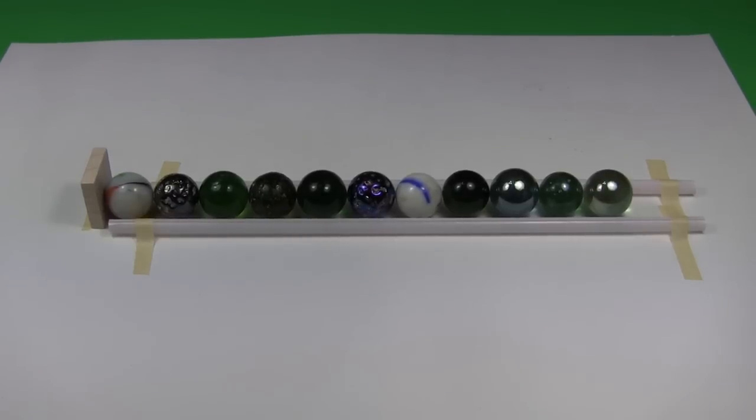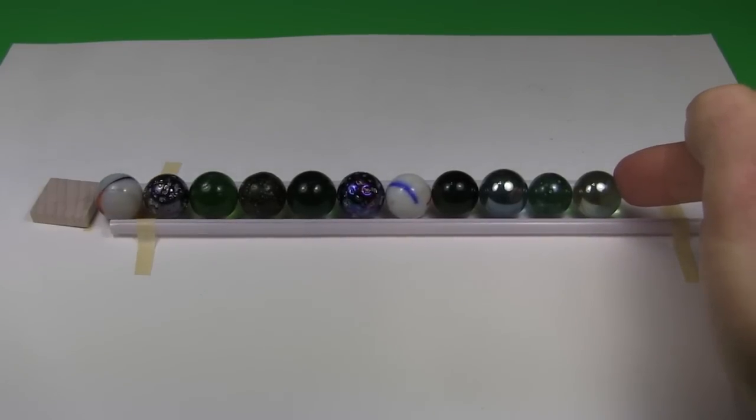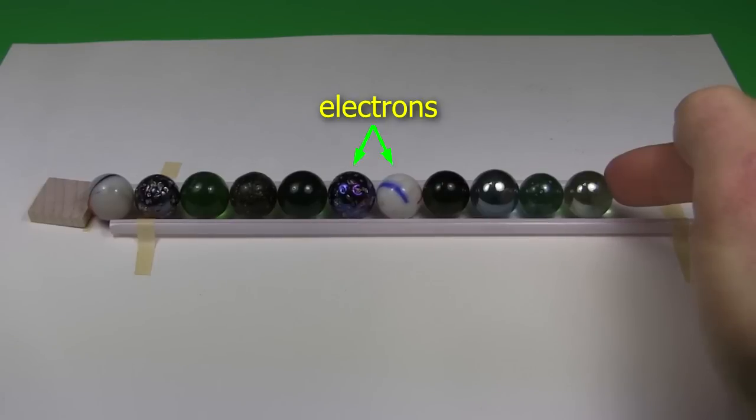One way to visualize what's going on is to use this row of marbles. When we push on one marble, the effect of that push is passed on from marble to marble, and the result is felt by the wooden tile almost immediately. The individual marbles represent individual electrons. They don't move very far along the way. Electricity is represented by the effect on the wooden tile. That effect is passed on almost immediately.